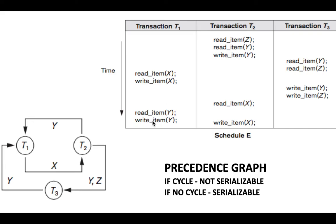Next is write Y in T1. This conflicts with write Y in T2, so there should be an arrow from T2 to T1 — already drawn — labeled Y. Write Y in T1 can also conflict with read Y in T3, so there should be an arrow from T3 to T1 — also already drawn. Finally, write X in T1 conflicts with read X in T2: there should be a T1-to-T2 arrow with X, which is already drawn.